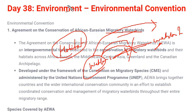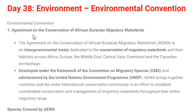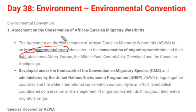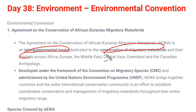The Agreement on Conservation of African-Eurasian Migratory Waterbirds is an intergovernmental treaty — signed by the governments of European and African countries — to conserve migratory waterbirds. These migratory birds are present across Africa, Europe, Middle East, Central Asia, Greenland, and the Canadian Archipelago. This agreement was developed under the framework of the Convention on Migratory Species (CMS), and its administration is carried out under the United Nations Environment Programme (UNEP).